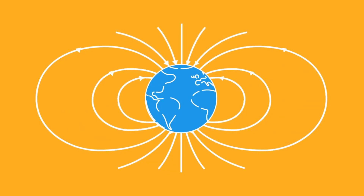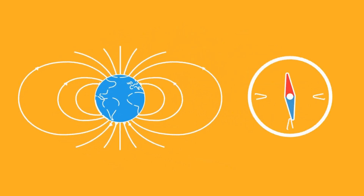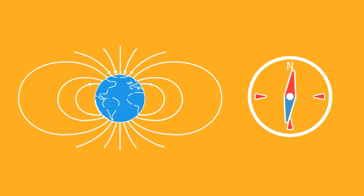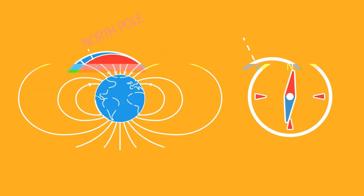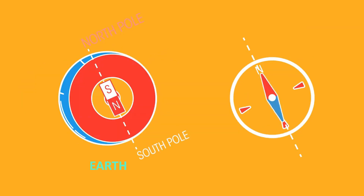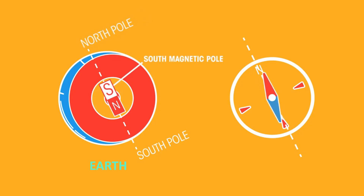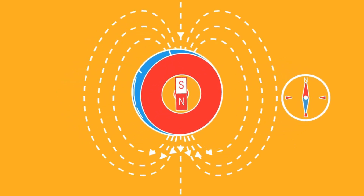The Earth actually behaves like a giant bar magnet. The compass that we use in daily life works by detecting the Earth's magnetic field. As the Earth is a giant magnet and a compass is also a magnet, they act the same as any two magnets when brought together. The Earth's north pole geographically is actually the south magnetic pole of the Earth. Therefore, the north pole of the compass attracts the south magnetic pole of the Earth, which is why we can use the compass to show the geographic north.